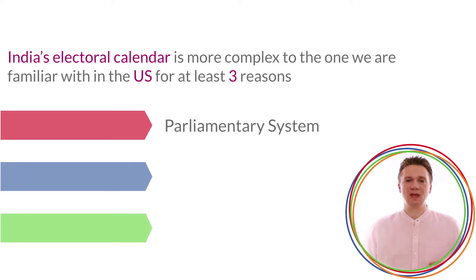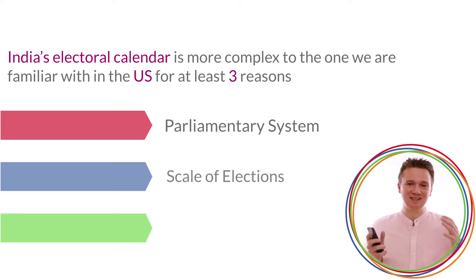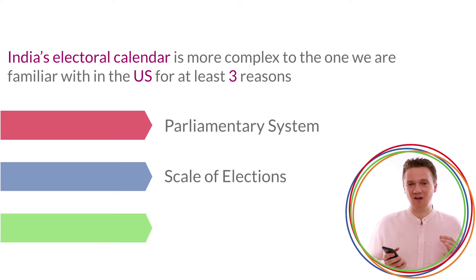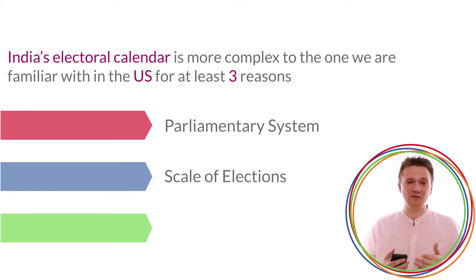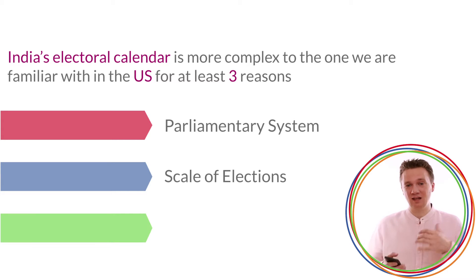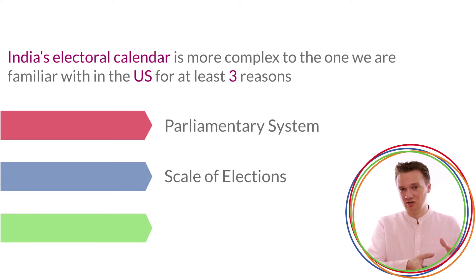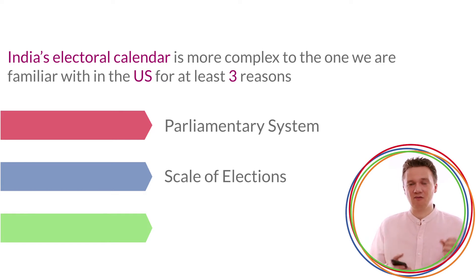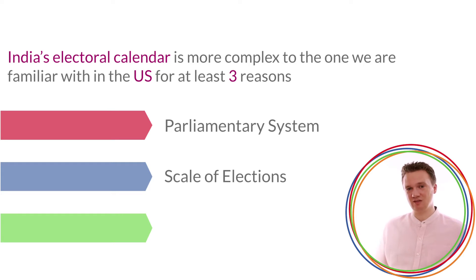The second reason is that the scale of elections means they are spread out — not on a single day, but often over weeks, sometimes even months. This allows the electoral commission's team and security forces, if required, to ensure that voters in every district have a free and fair election.